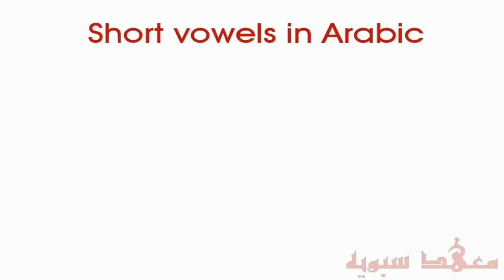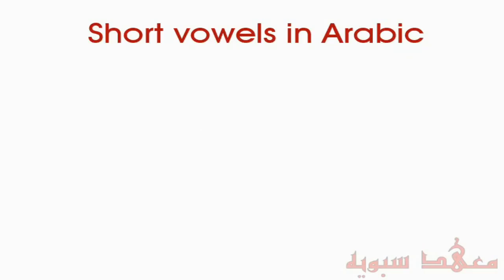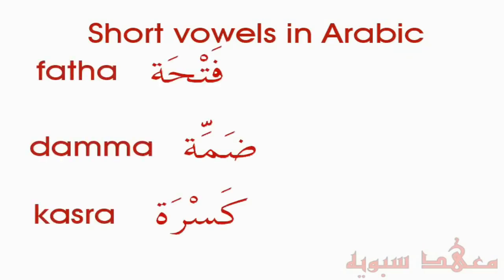In this video, I'm going to be explaining short vowels in the Arabic language. Unlike English, where we have five vowels — A, E, I, O, U — in Arabic we only have three, and they are known as Fatha, Dhamma, and Kasra.